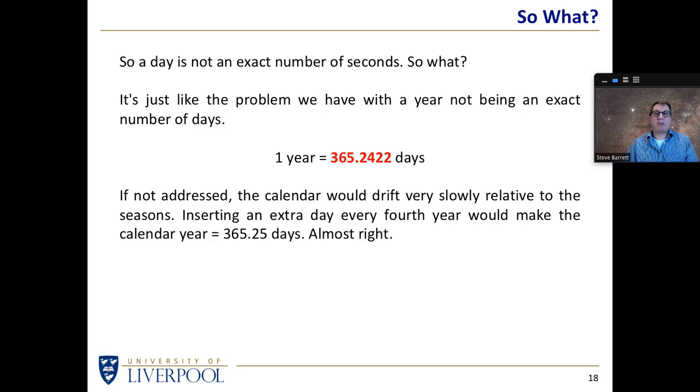So if not addressed, and we simply said a year is 365 days, then the calendar would drift very slowly relative to the seasons. We can keep them close to being in sync if we add an extra day every fourth year to the calendar, because that would give us a year of 365.25 days, which is a reasonably good approximation to the actual length of the year.